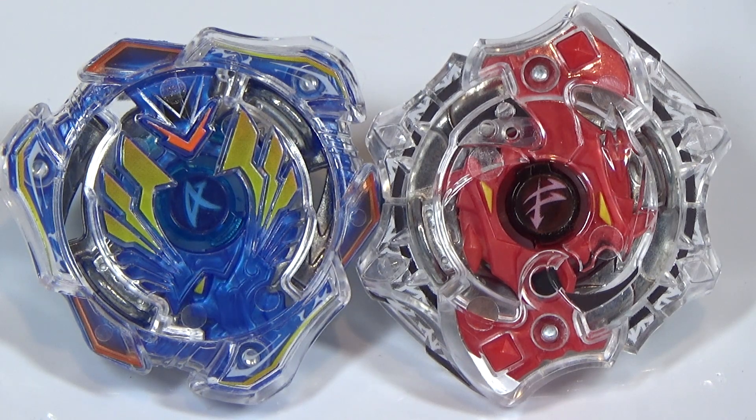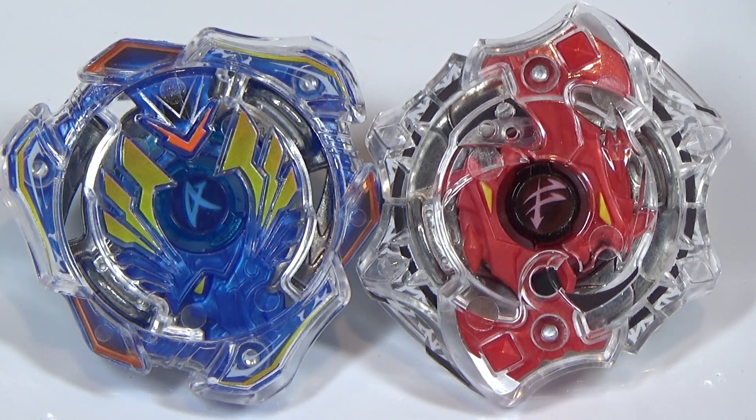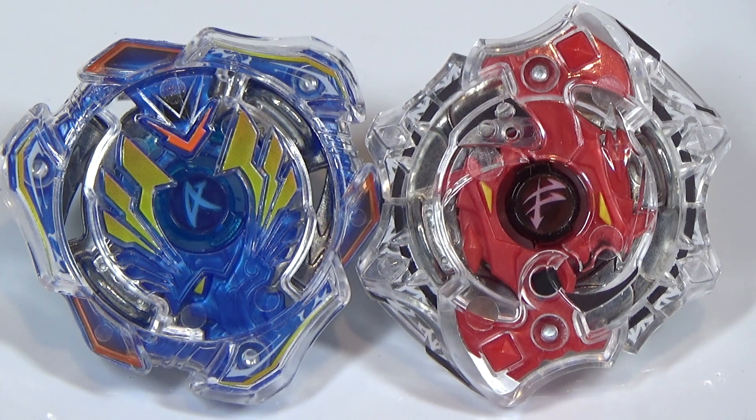On the left, we have Valkyrie Wing XL, an attack type. And on the right, we have Spriggan Spread Fusion, a balance type.